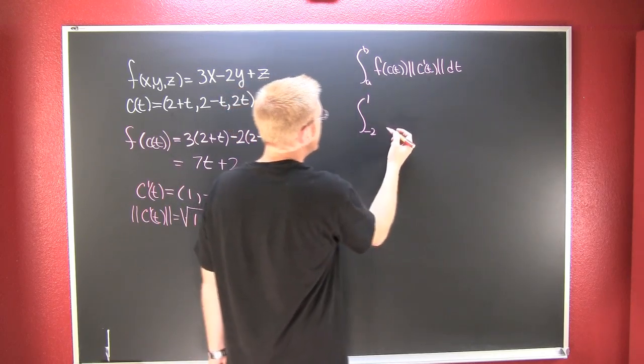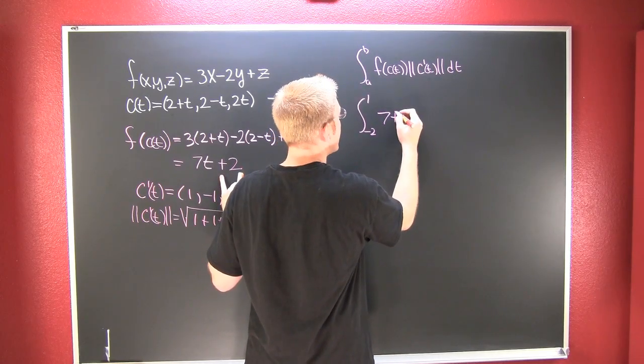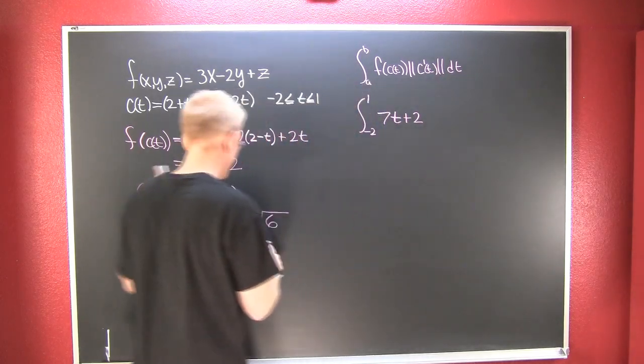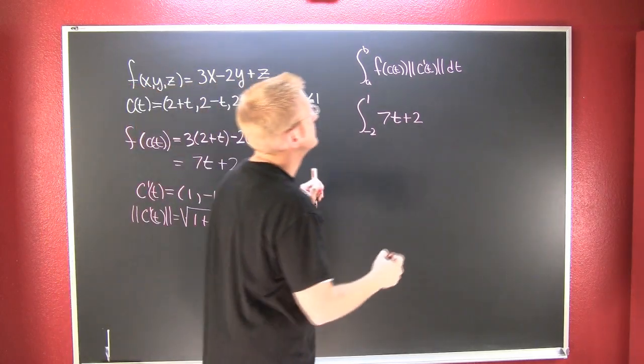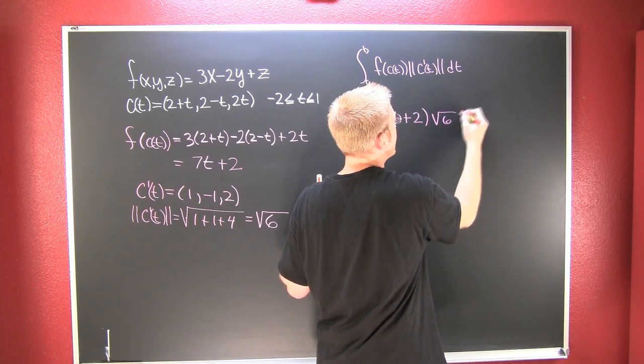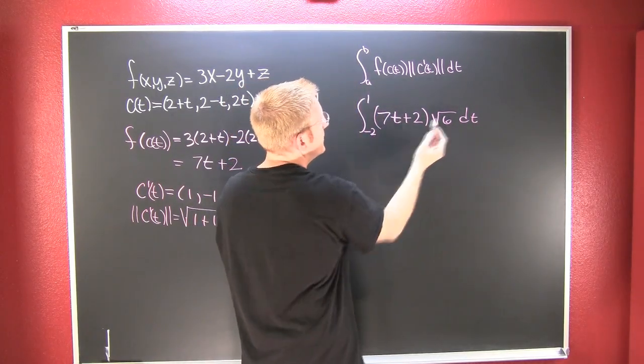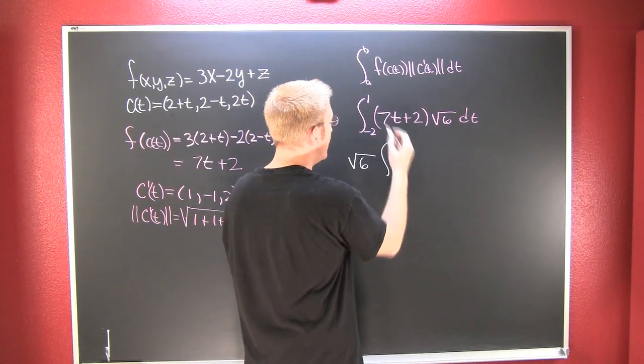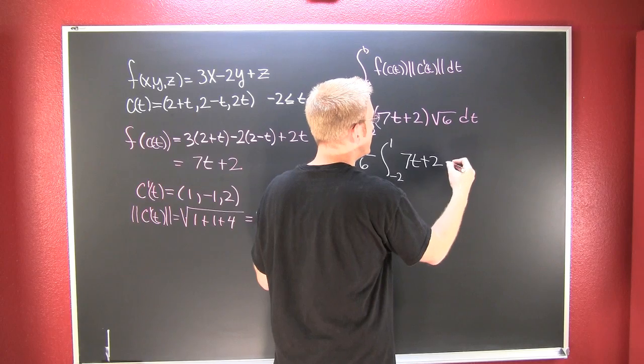Alright. And this is going to be 7T plus 2. And then I'm going to multiply it by the magnitude of the tangent, which is going to give me times the square root of 6 DT. So now what I can do is I can pass this out, my constant, square root 6.